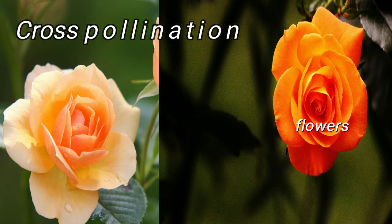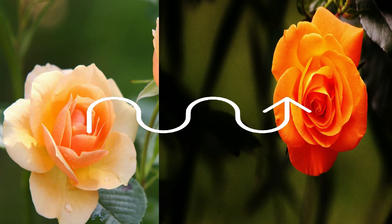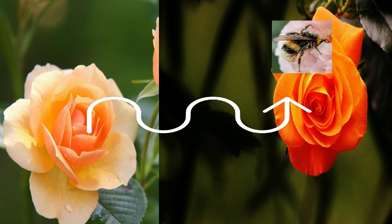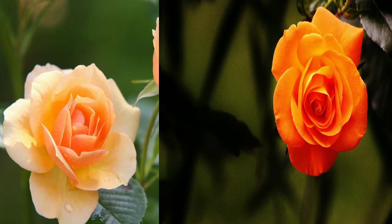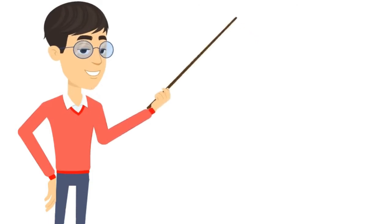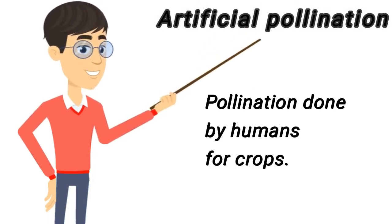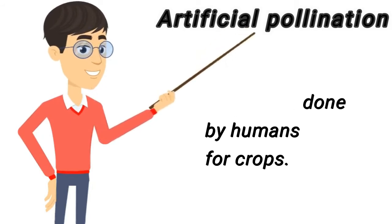If pollination occurs between two different plants and two different flowers — meaning a flower from one plant pollinates another with the help of a bee as the pollinating agent — that is called cross-pollination. Now look at this: a human is interacting between two flowers and pollinating them. Pollination done by humans, mainly for the use of crops, is called artificial pollination.